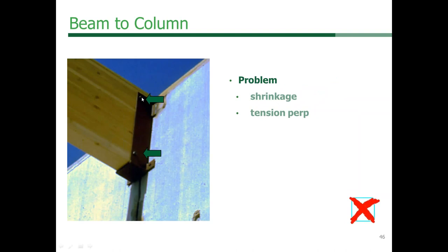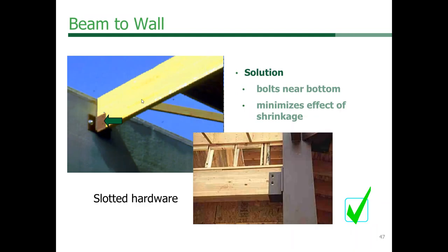A photo example shows a beam with a bolt at the top and bottom — when the member was in place and shrank, it was held at the top, and a shadow reveals where the beam actually raised up away from the bottom of the hanger bracket. A better connection shows a hanger with vertical slots to allow for movement of the wood member with changes in moisture content.